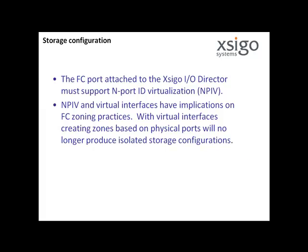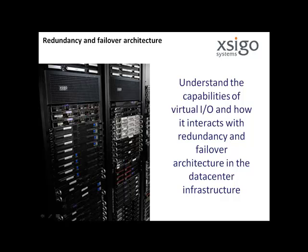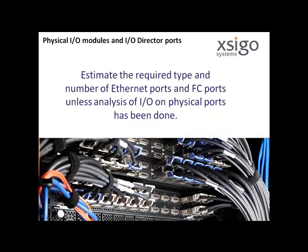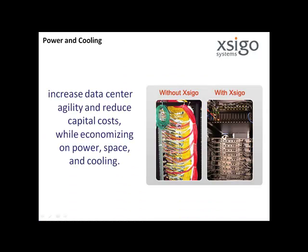Redundancy and failover architecture. Understand the capabilities of virtual I/O and how it interacts with redundancy and failover architecture in the data center infrastructure. Server type and OS: review the server and OS details to ensure no known issues exist when implementing virtual I/O. Physical I/O modules and ports in the I/O director: review the number and type of Ethernet ports and fiber channel ports required. This may need to be an estimate unless careful analysis of I/O on physical ports has already been done.